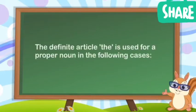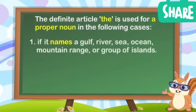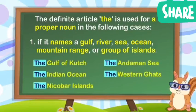The definite article THE is used for a proper noun in the following cases: if it names a gulf, river, sea, ocean, mountain range, or group of islands. For example, the Gulf of Kutch.